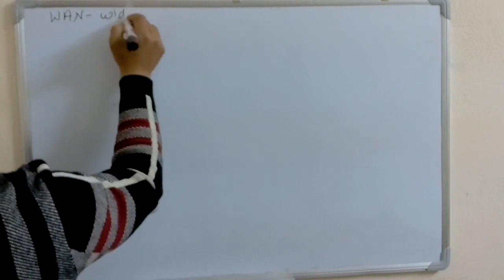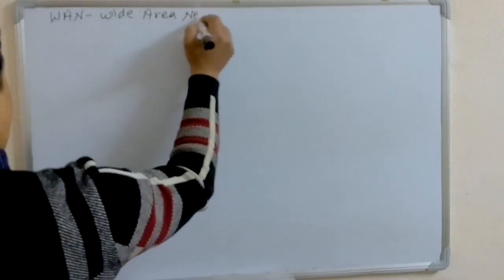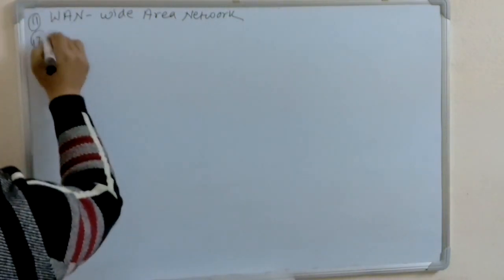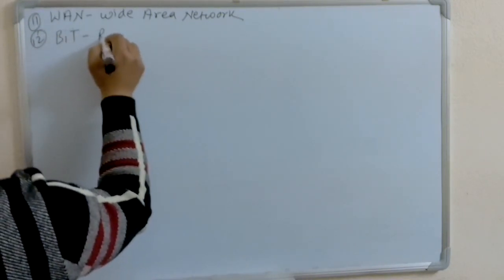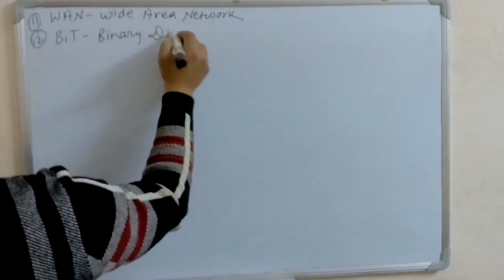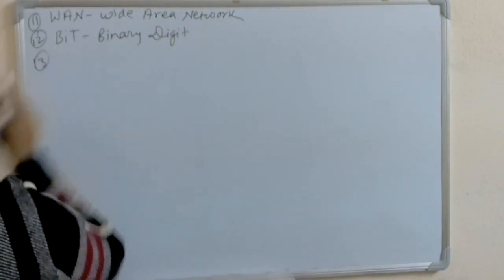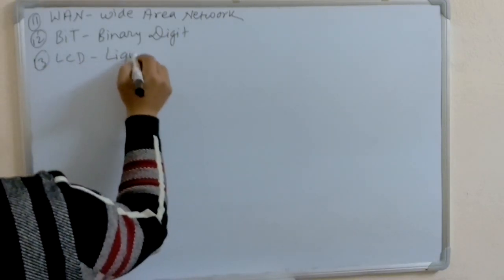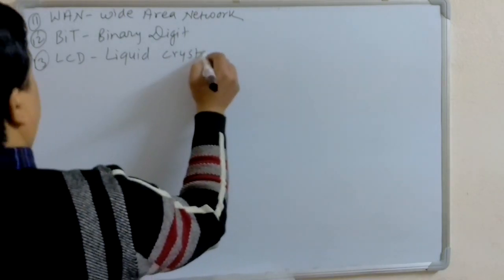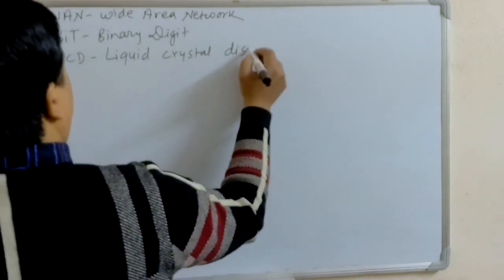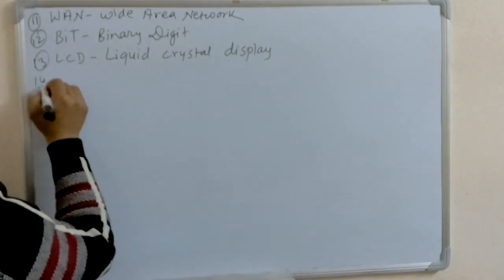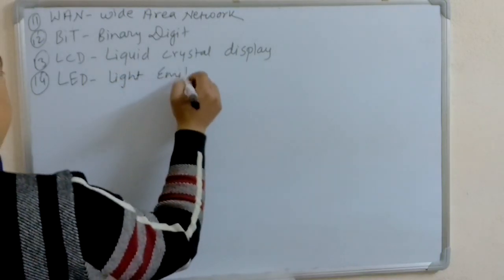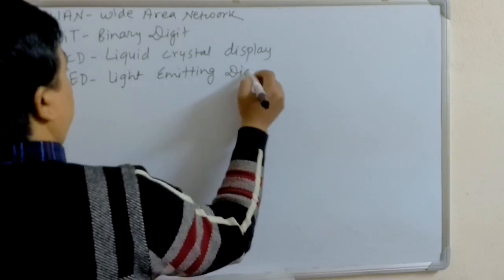WAN: Wide Area Network. BIT: Binary Digit. LCD: Liquid Crystal Display. LED: Light Emitting Diode.